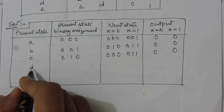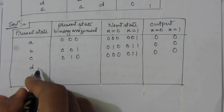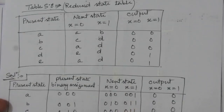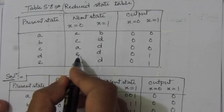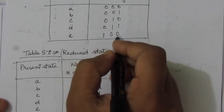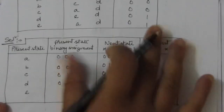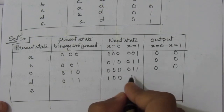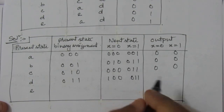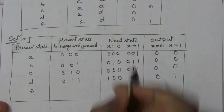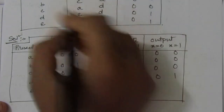Next we have present state small d. For small d, the binary representation is 0, 1, 1. The next states are e and d. For e, the binary is 1, 0, 0, and for d, we have 0, 1, 1. The outputs are 0 and 1, similar to the previous table.